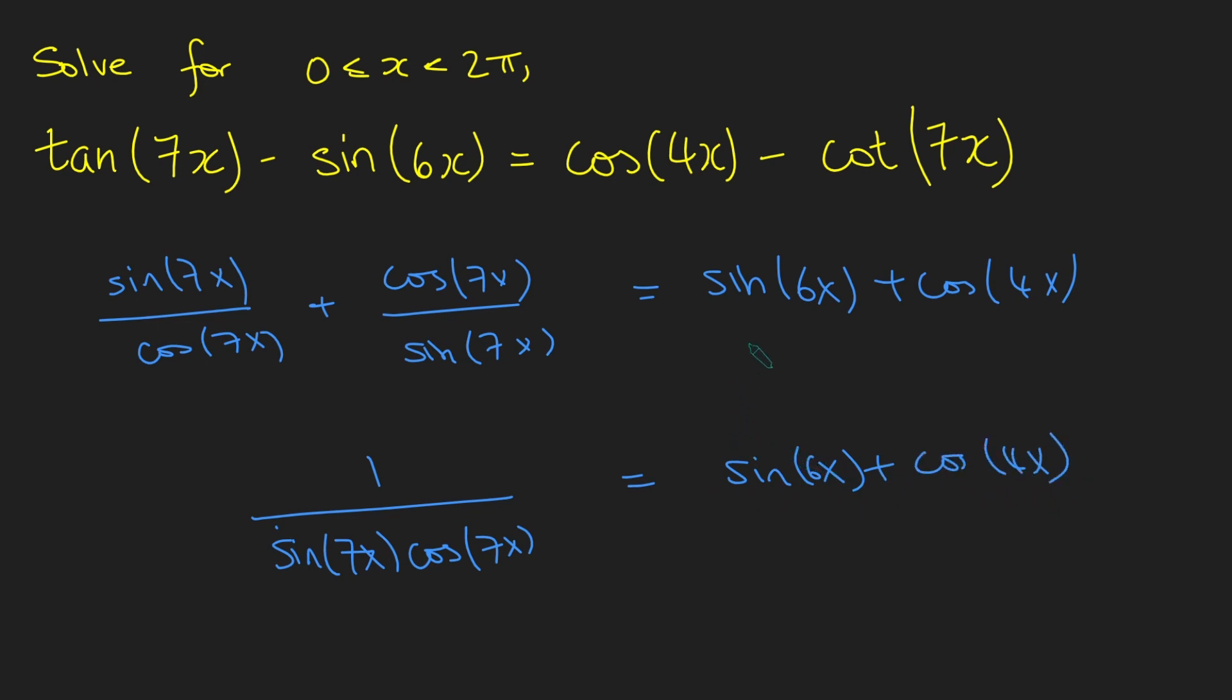Now, what we can notice is that this bottom here is sine of 7x times cos of 7x. And if I multiply it by 2, then this is the double-angle formula for sine of 14x. But obviously, I can't just multiply that by 2, so I'm also going to put a 2 on the top here. And so we get that 2 over sine of 14x equals this guy here. But if I just multiply both sides by sine of 14x, I get 2 equals sine of 14x multiplied by sine of 6x plus cos of 4x.